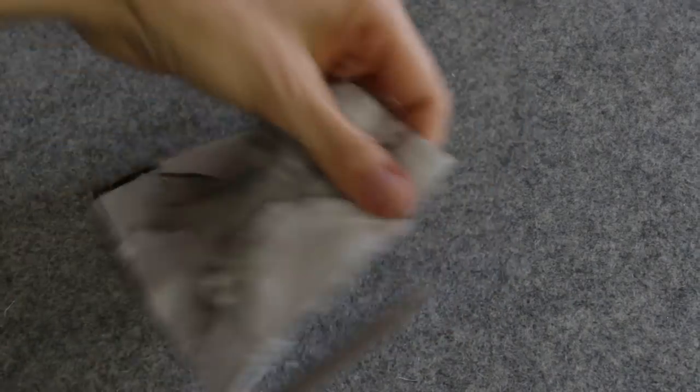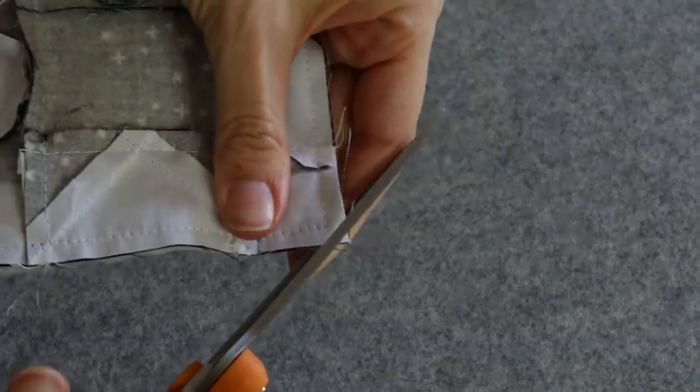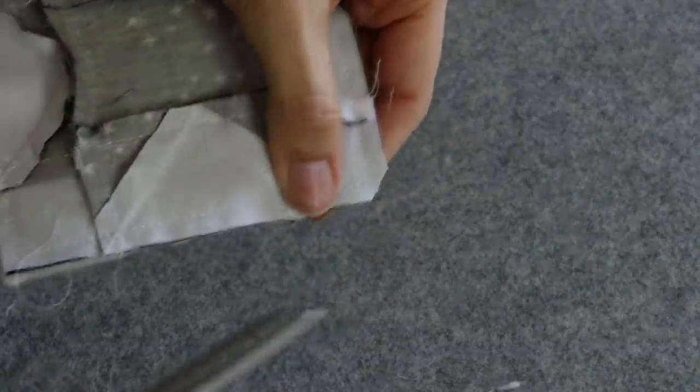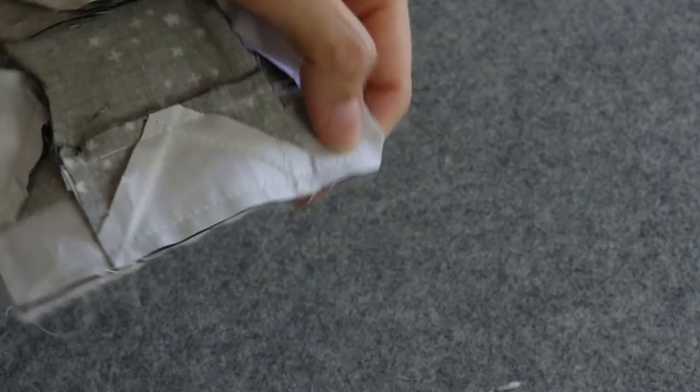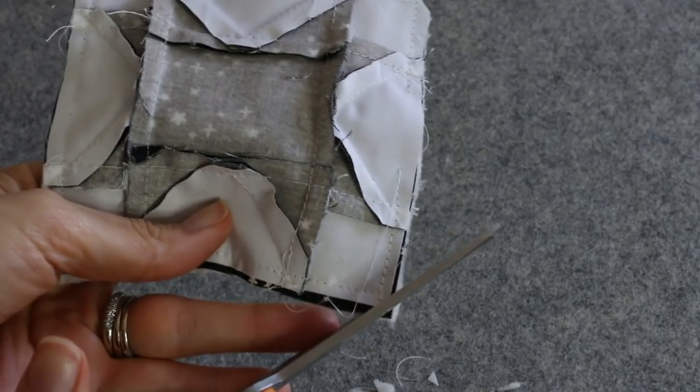So then what we need to do is trim our corners slightly so that we get a nice good point. You don't want to get too close to those threads. All we're doing is reducing that bulk in the seam. And if you have any batting flaring out or anything like that, this would be the time to get that cleaned up.